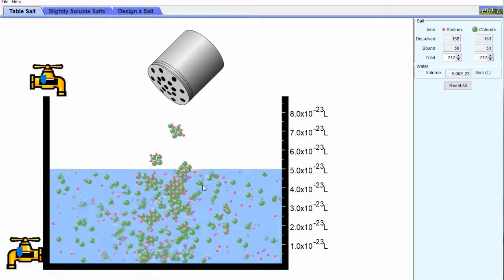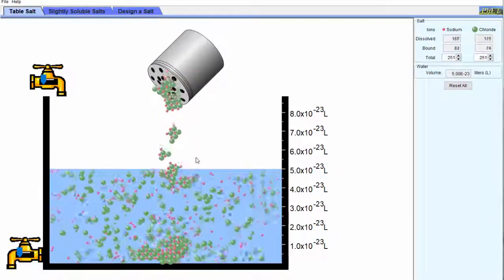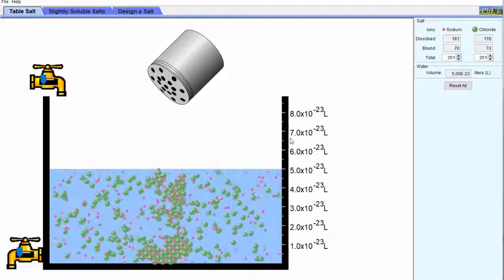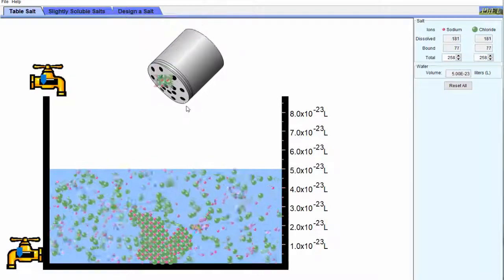However, at some point we've added so much salt that the water has become saturated with salt. This means that the aqueous salt solution has reached a maximum concentration of sodium chloride, and no more can dissolve.